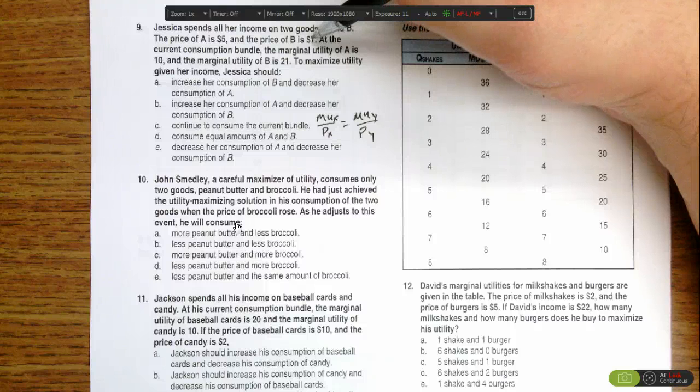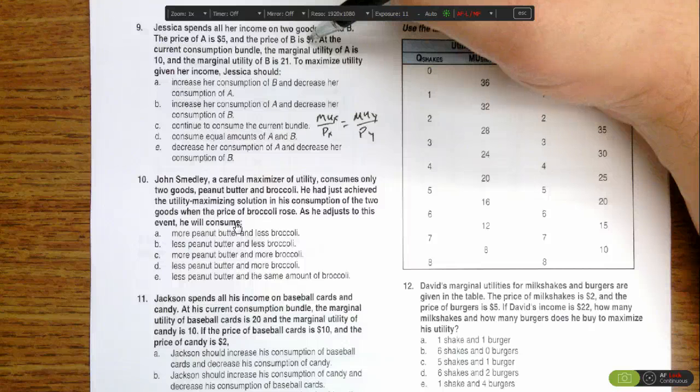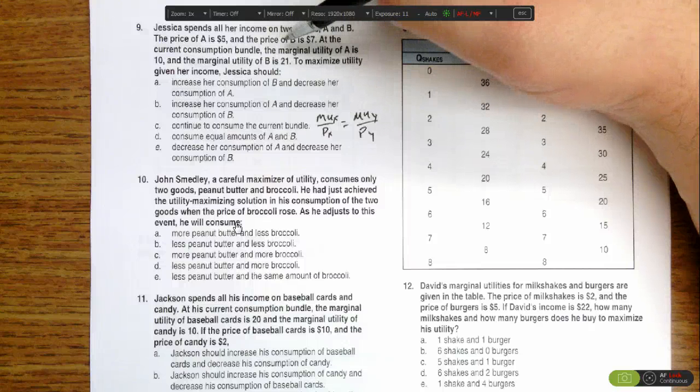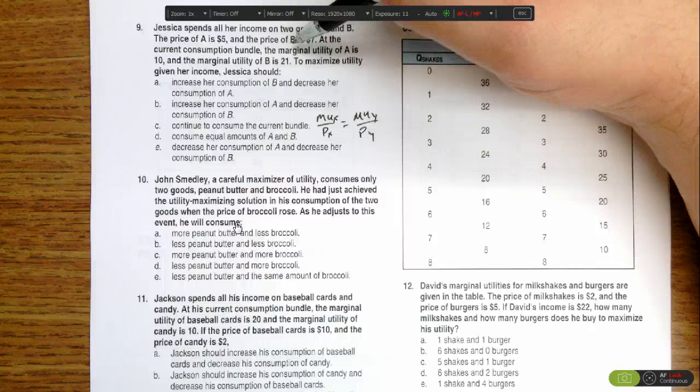She's getting more marginal utility per dollar spent by purchasing B than A, so she should purchase more B and less A.